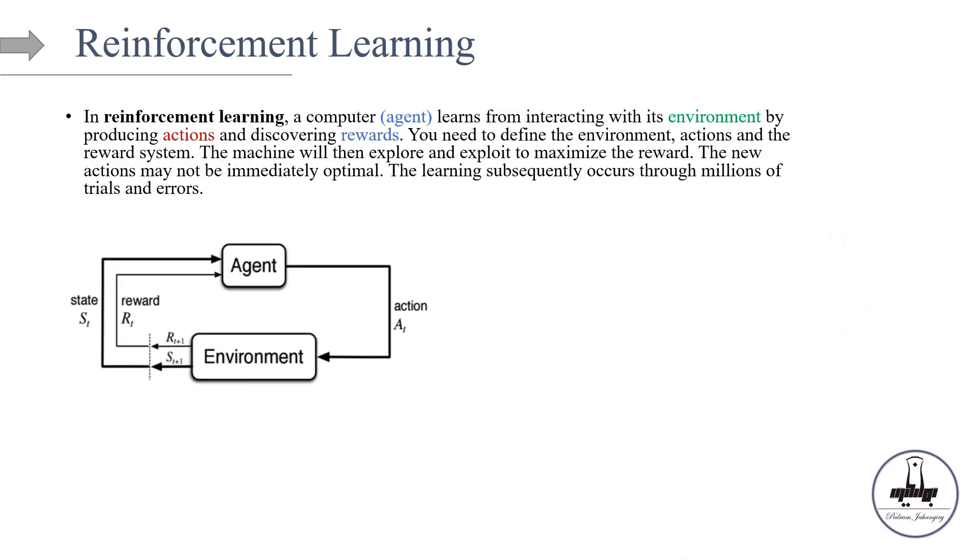Now, finally, let's talk about reinforcement learning. In reinforcement learning computer or the agents learns from interacting with the environment by producing actions and discovering rewards. Remember, you need to define the environments and actions and the reward system. The machine will learn, explore and exploit to maximize the reward. The new actions may not be immediately optimal. It means that there might be a delay between actions and reward.